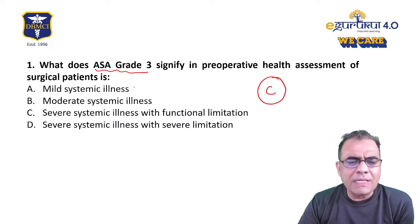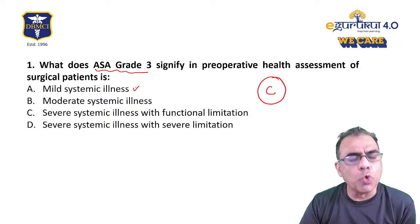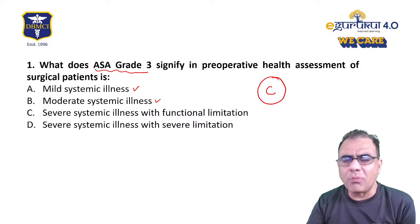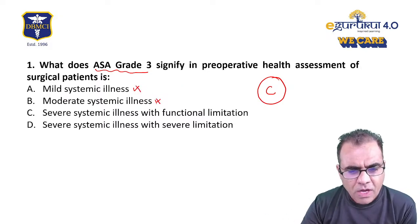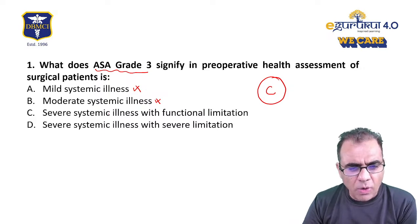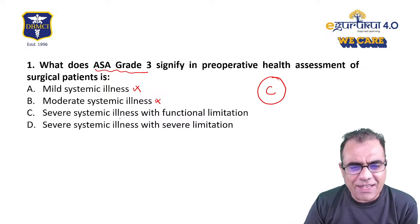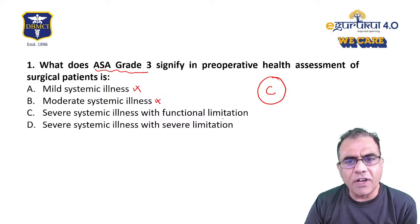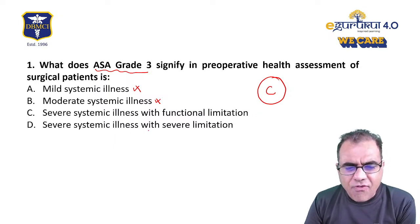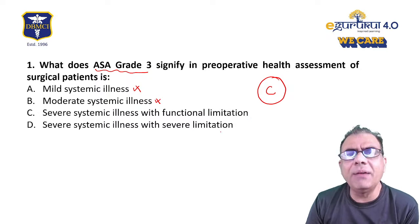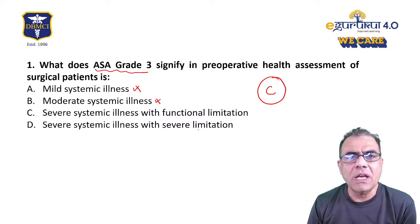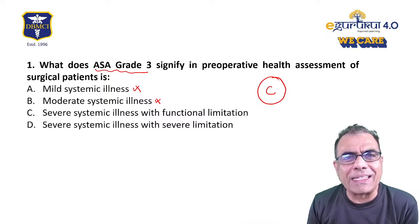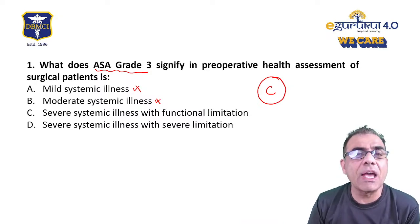Mild disease is obviously ASA 2. Moderate disease normally doesn't fall in anything, so that's ruled out. We have two options: C and D. Severe systemic illness with functional limitation is ASA 3. Severe systemic illness with severe limitation indicates incapacitating disease, which becomes ASA 4.